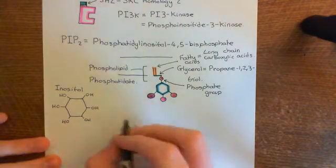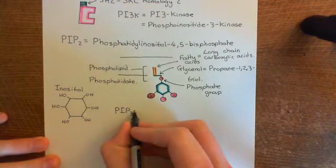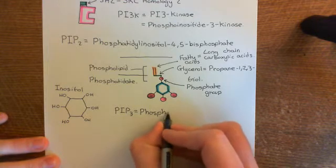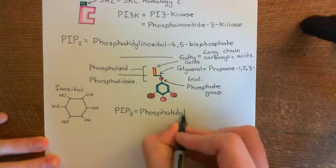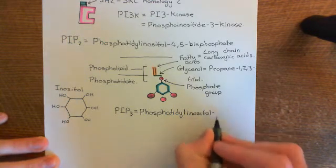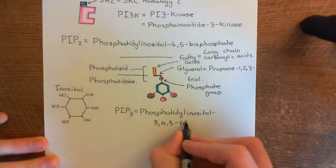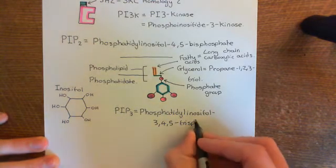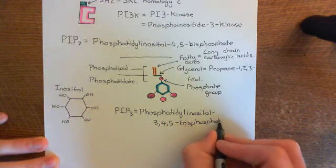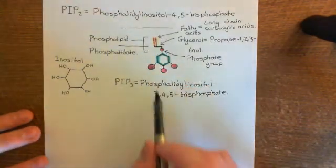So what do you get now? You get what is known as PI3, which stands for phosphatidylinositol — abbreviated to PI, where P is phosphatidyl and I is inositol — and then it's 3,4,5-trisphosphate, abbreviated with a subscript 3 to denote three phosphate groups. Phosphatidylinositol 3,4,5-trisphosphate, or PIP3 for short, is this molecule that you now produce.